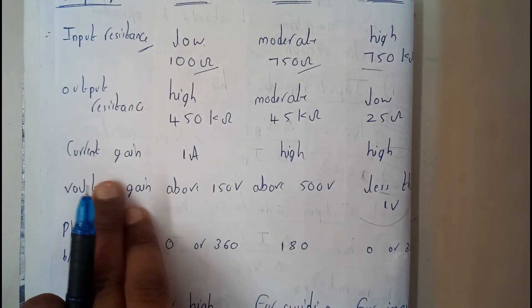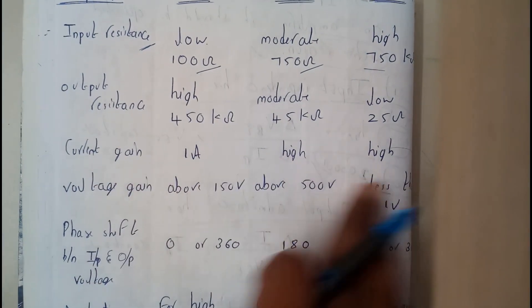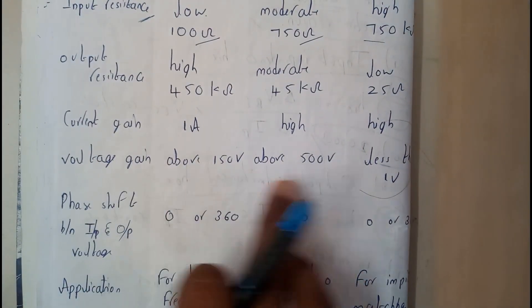So current gain is 1 which is low, high, high. Voltage gain above 150 volts, above 500 volts, less than 1 volt.